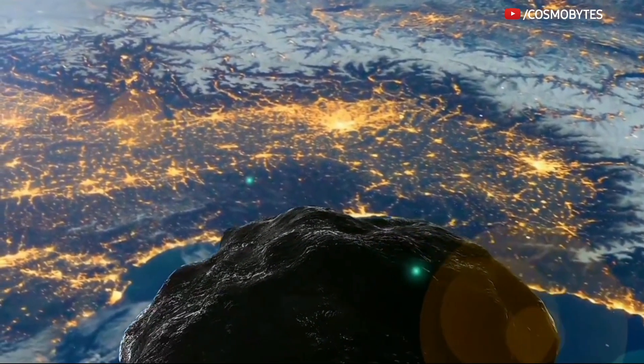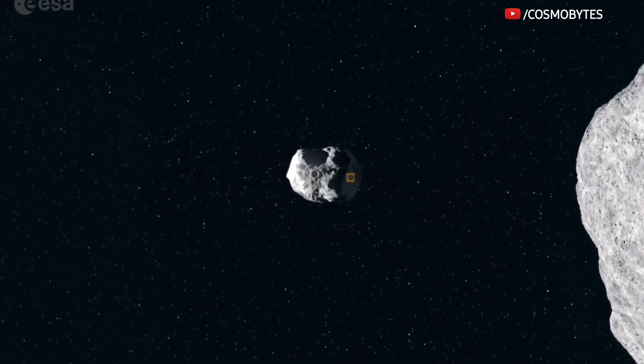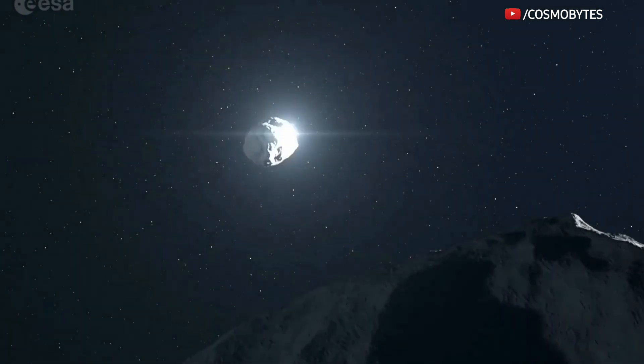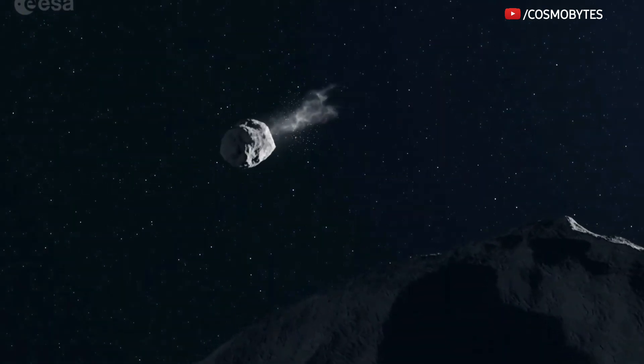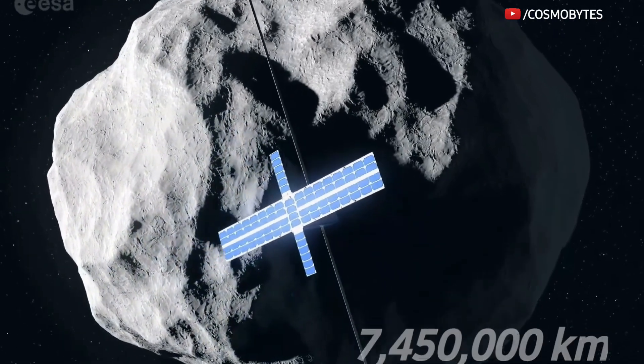In terms of closest approach, 2022 GU3 is expected to fly past the Earth at a distance of only 1,740,000 kilometers, while the 2017 UR2 will make its closest approach at a distance of 7,450,000 kilometers.